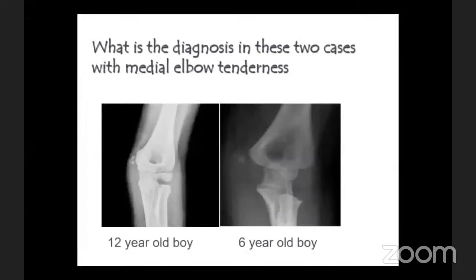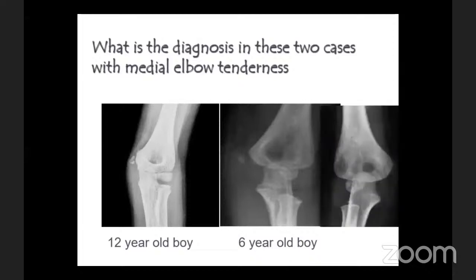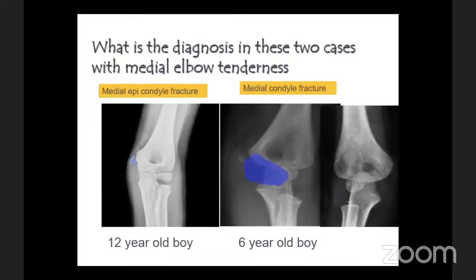You can see that a normal AP may show undisplaced medial epicondyle fracture, while the axial view shows anterior displacement — an indication for fixation. Two children with similar injuries but different age groups: a 12-year-old with medial epicondyle fracture. A six-year-old diagnosed as medial epicondyle fracture — but when you take an x-ray of the opposite side, there is no medial epicondyle ossified at six years old. The fragment actually comes from the metaphyseal part of the medial condyle, making it a medial condyle fracture — a big intra-articular fracture needing open reduction and fixation.